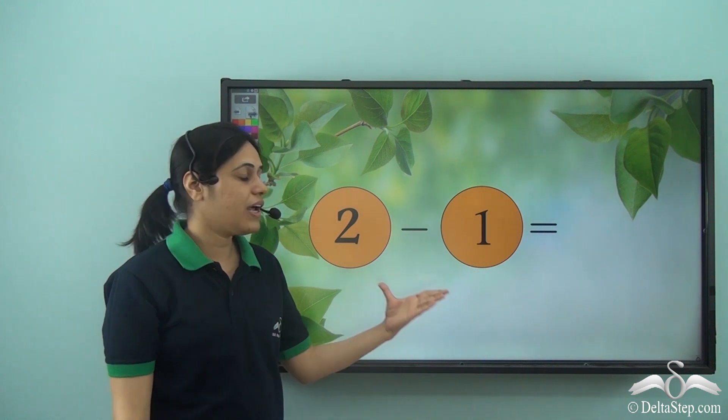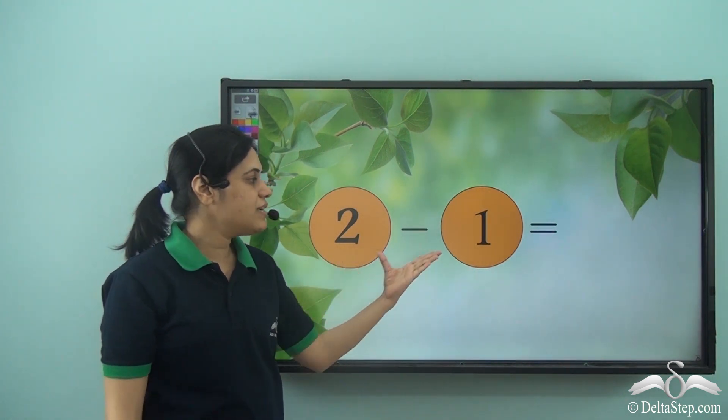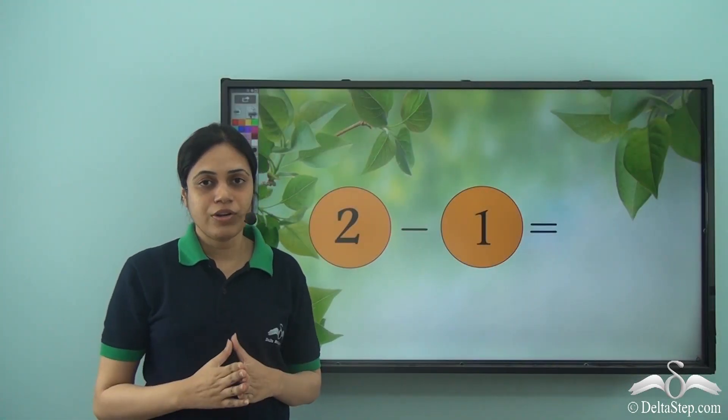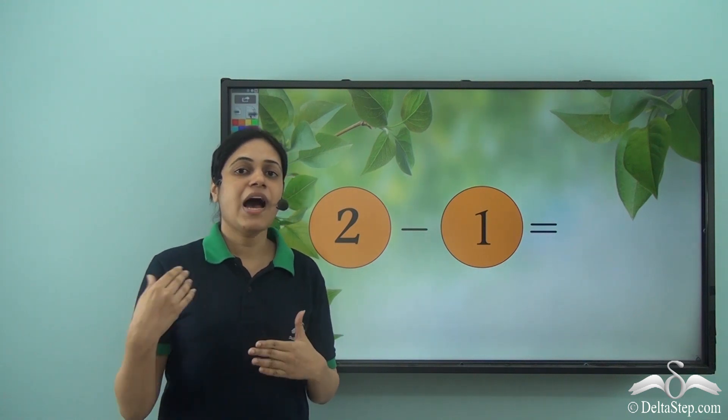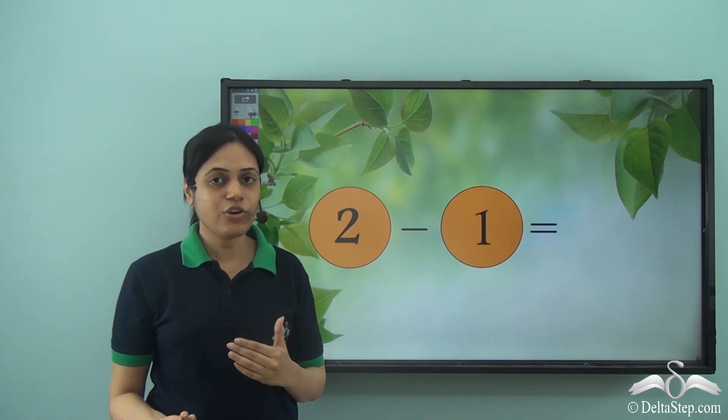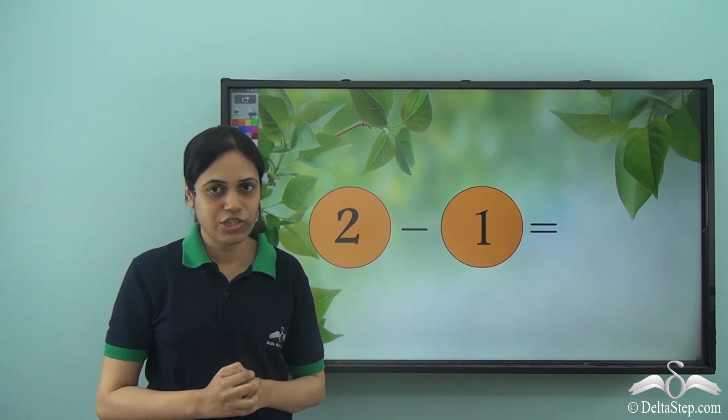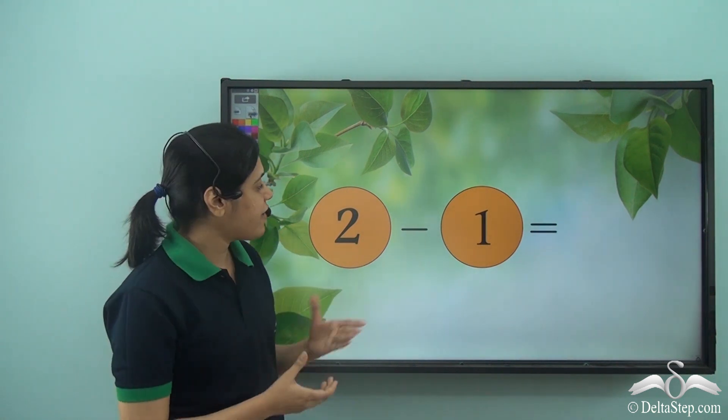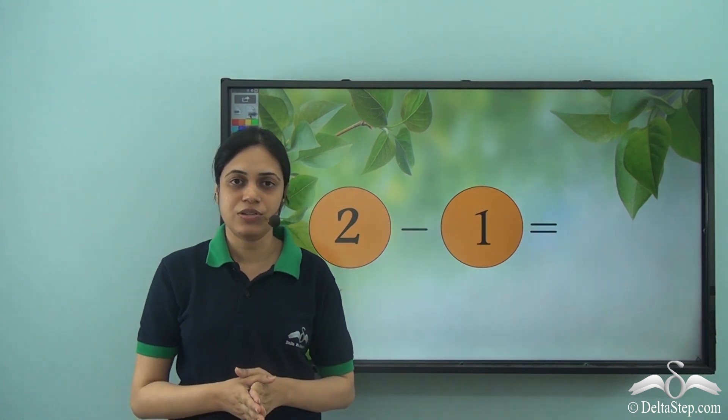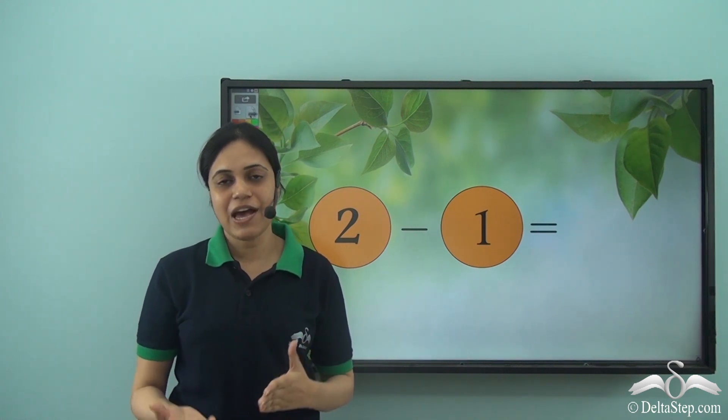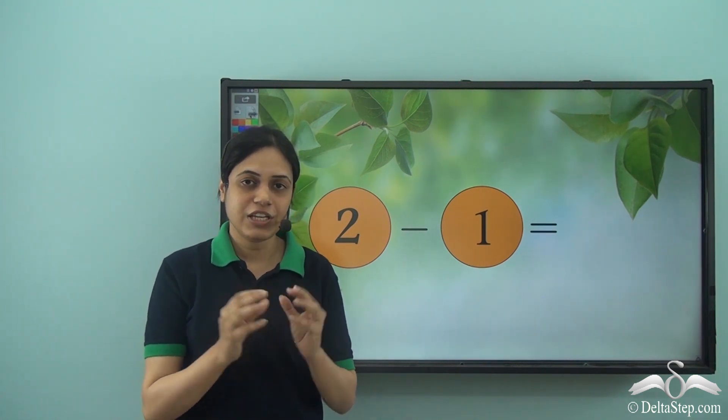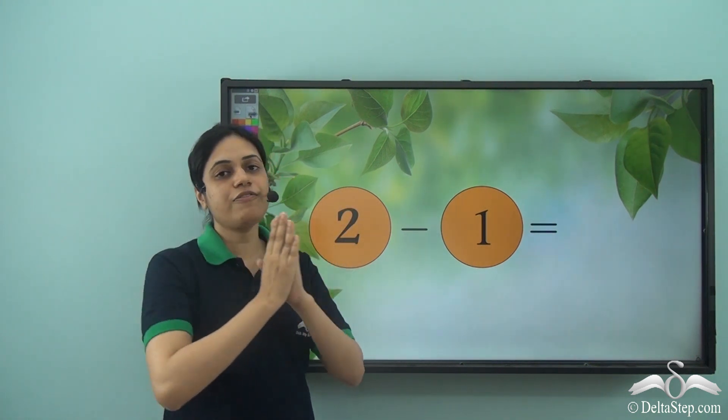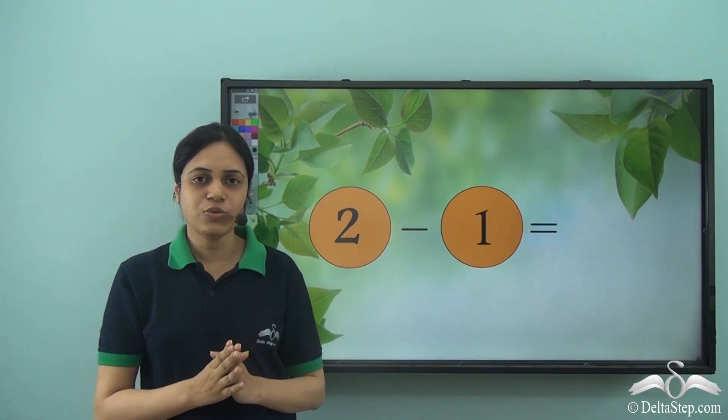Now this is another subtraction we have. Two minus one is equal to what? But where are the ice creams gone? Till now we have counted ice creams and other objects to find the answer of subtraction. Now we don't have any objects to count. So how will I find the answer of this subtraction? Well, thankfully, as we have done in the case of addition as well, we can use our fingers as objects to find the answer of this subtraction.